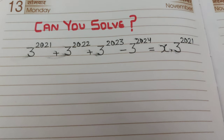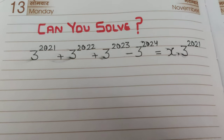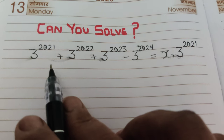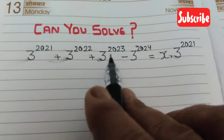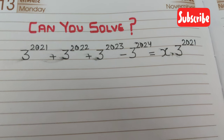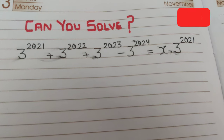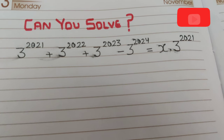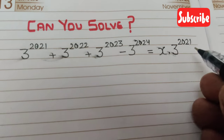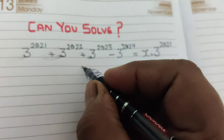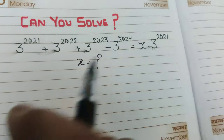Can you solve this Math Olympiad question? The question is: 3 raised to power 2021, plus 3 raised to power 2022, plus 3 raised to power 2023, minus 3 raised to power 2024, equals x into 3 raised to power 2021. Find the value of x.